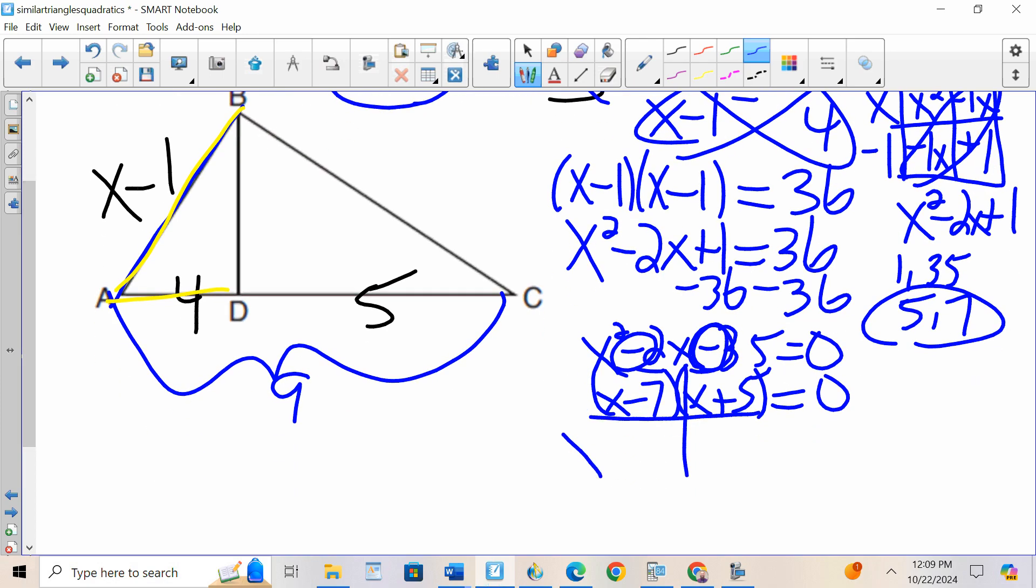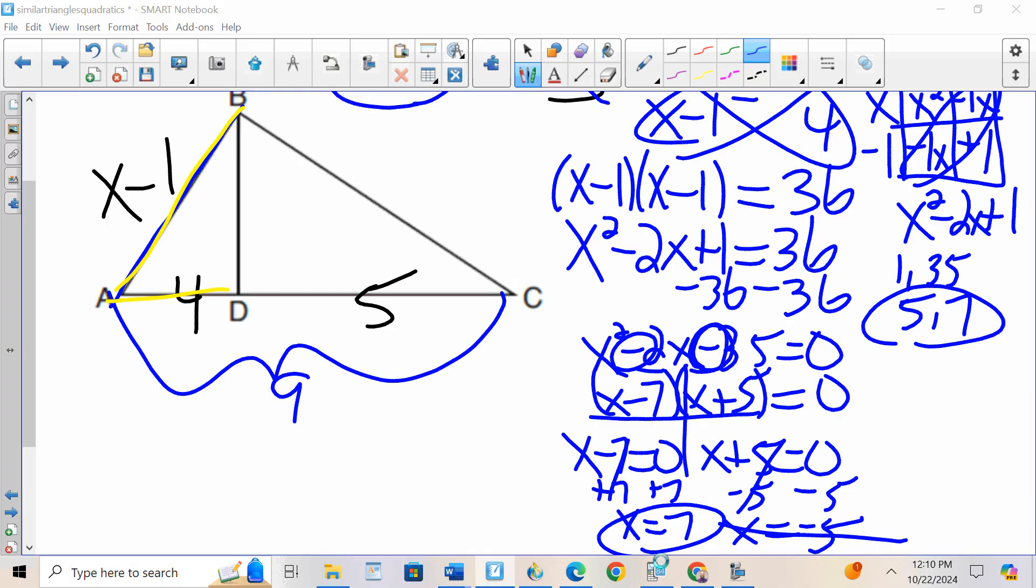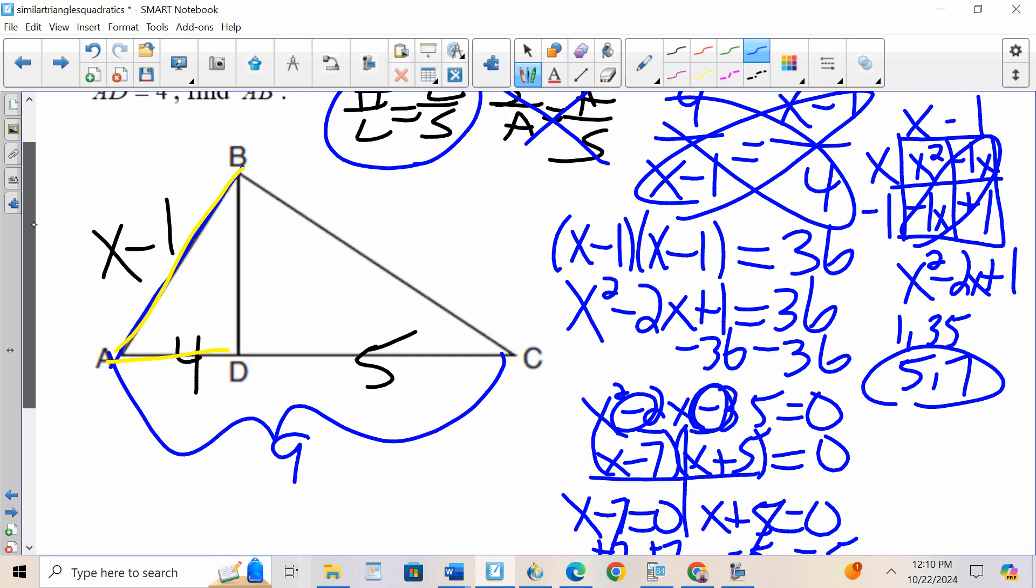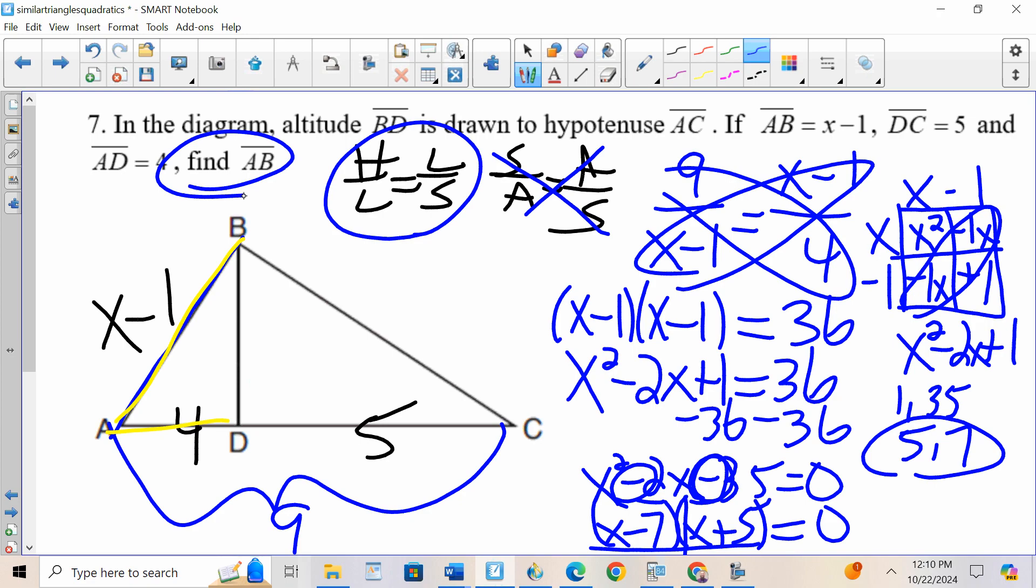I set each factor equal to 0. X minus 7 equals 0, X plus 5 equals 0. X equals 7, X equals negative 5. I can't have a negative distance, so I cross that one out, X is 7. The question is asking for AB. AB is X minus 1. So AB is 7 minus 1, AB is 6.